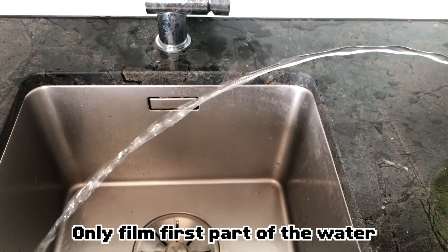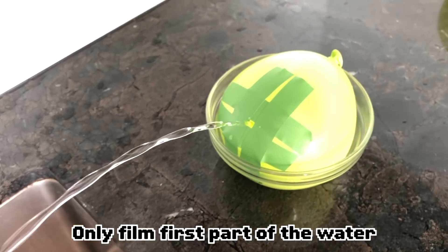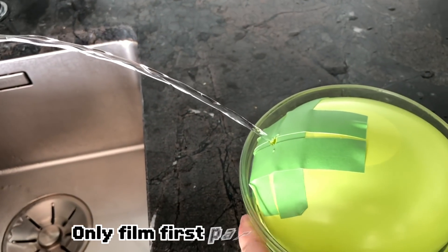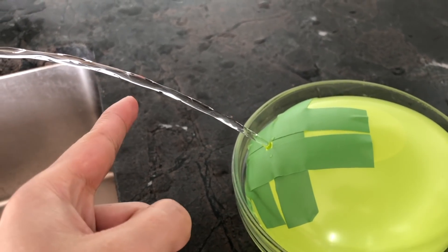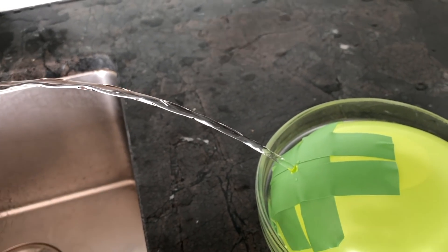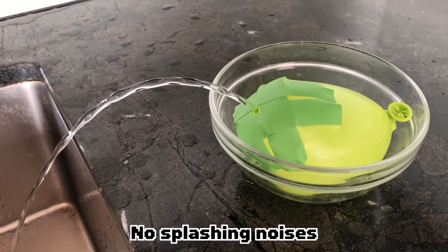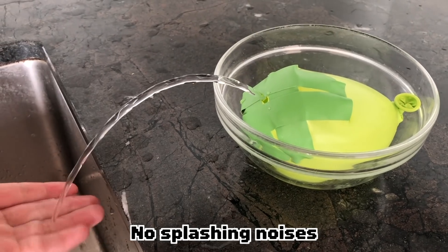And when you're filming this for social media, be sure to only show the first part of the water stream where the laminar effect is most obvious. And lastly make sure that you can't hear water splashing in the sink and that people can't tell the balloon is getting smaller.